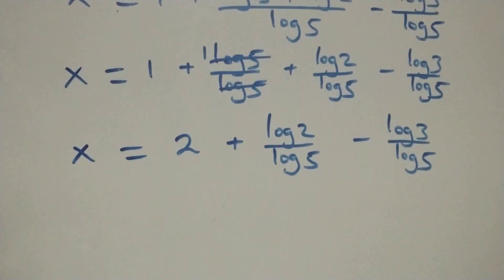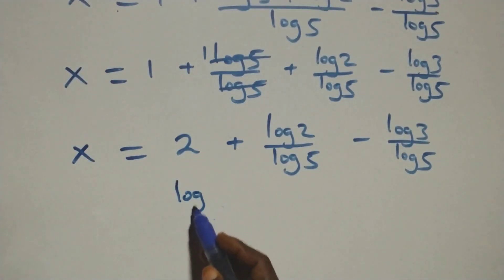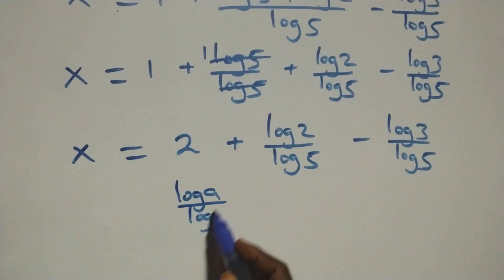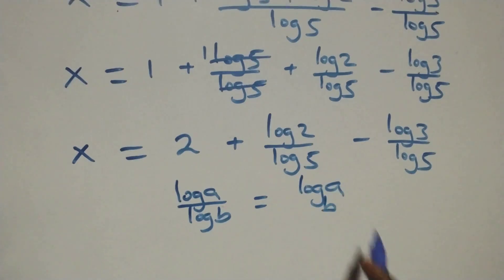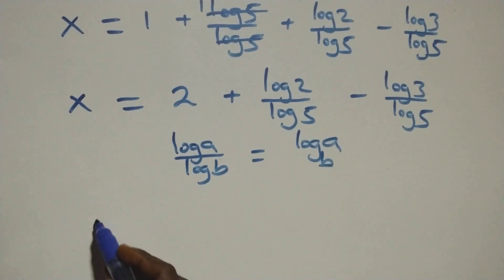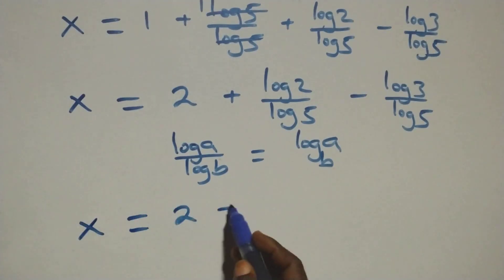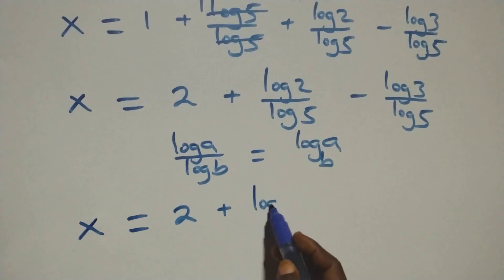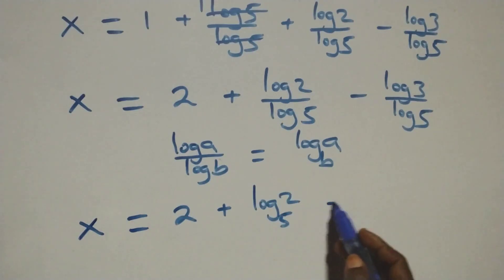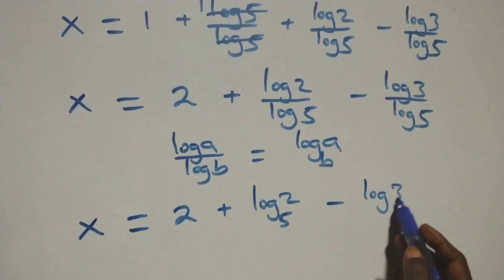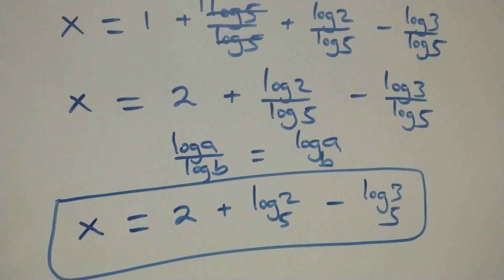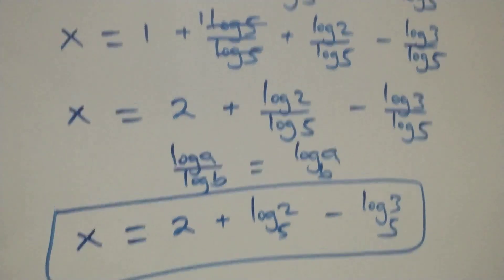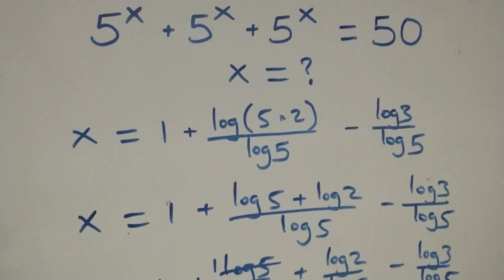We apply the change of base formula. So x equals 2 plus log base 5 of 2, minus log base 5 of 3. That is the value of x.